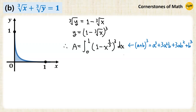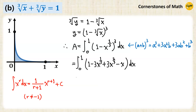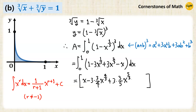Now we apply the cube formula. So we have 1 minus 3x to the power of 1/3, then plus 3x to the power of 2/3, minus x. Using the power rule again, we have x minus 3 times (3/4) x to the power of 4/3, then plus 3 times (3/5) x to the power of 5/3, and minus 1/2 x squared. So now we have 1 minus 9/4 plus 9/5 minus 1/2, which gives 1/20.